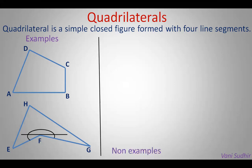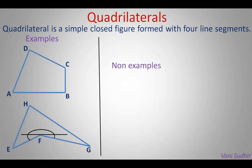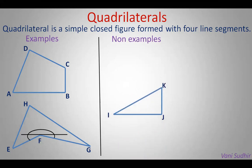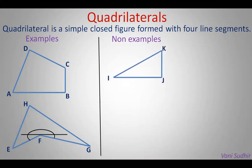Let us see non-examples to understand the concept much better. Here we have a polygon IJK which is formed with 3 line segments. So it is not a quadrilateral — it is a triangle.